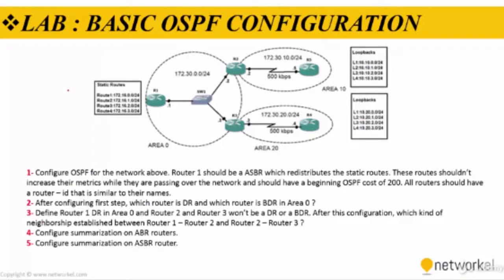Alright guys, it's lab time again and we have a basic OSPF configuration lab. We have five steps to accomplish with five routers in our topology. We need to configure OSPF for the network: here is area 0, here is area 10, and here is area 20. Router 1 should be an ASBR which redistributes the static routes. These are the static routes from an external routing domain, and these routes should not increase their metrics while passing over the network and should have a beginning OSPF cost of 200.